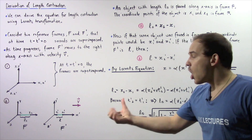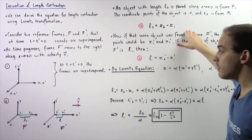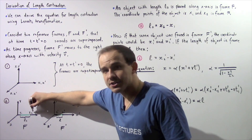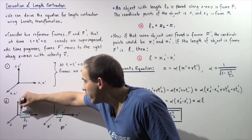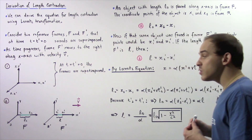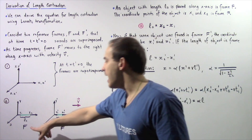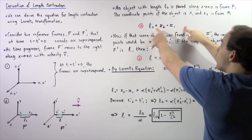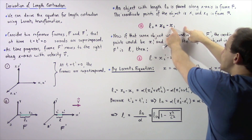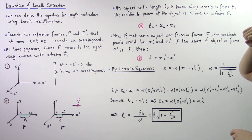The object and the frame are not moving relative to each other. The coordinate points of our object are given by x1 and x2, where x1 is the beginning point and x2 is the final point. We can define the length of the object in frame f' using equation A: L0 is equal to x2 minus x1.